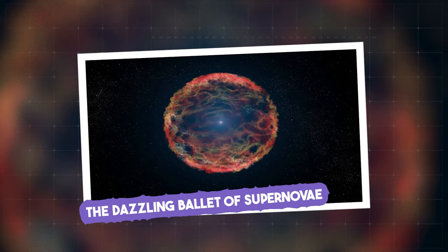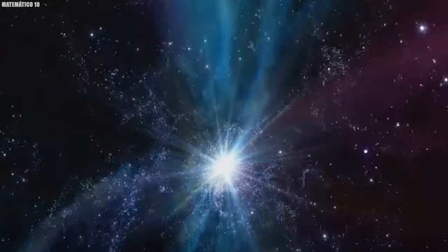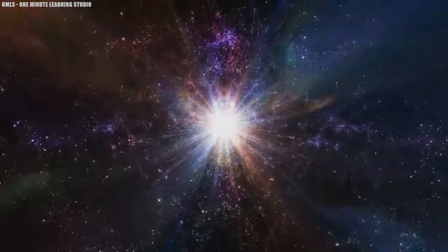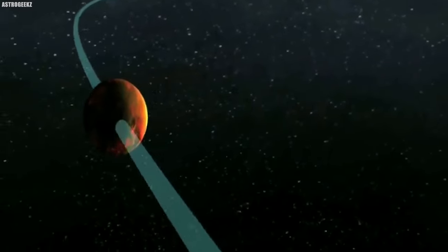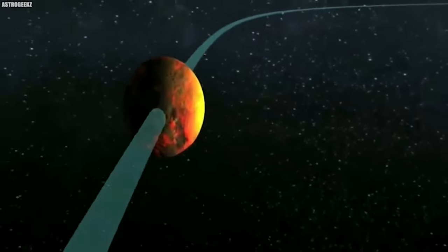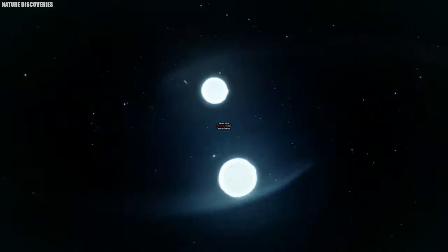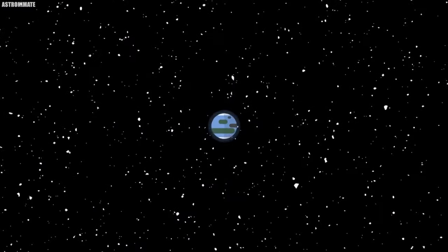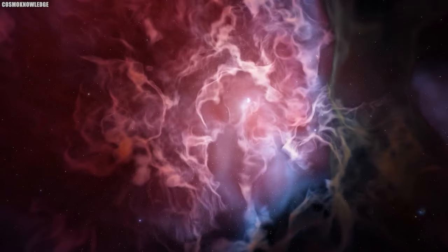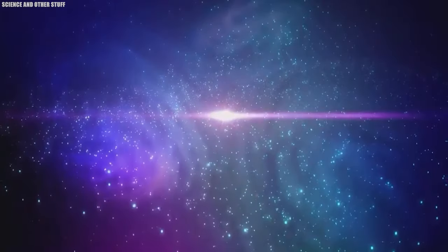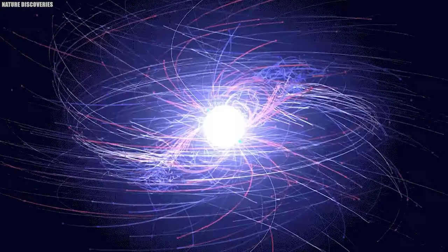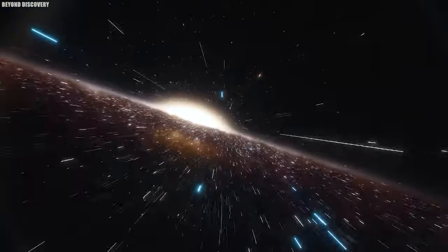The dazzling ballet of supernovae. Such a cosmic spectacle marks the dramatic finale of a colossal star's existence or the explosive transformation of a white dwarf. The celestial entity, known as the progenitor, undergoes a magnificent transformation, either collapsing into a dense neutron star, collapsing further into a mysterious black hole, or perhaps vanishing completely. This stellar ballet, known as a supernova, dazzles with an intense brilliance that can rival an entire galaxy at its peak luminosity, gradually waning over weeks or even months.